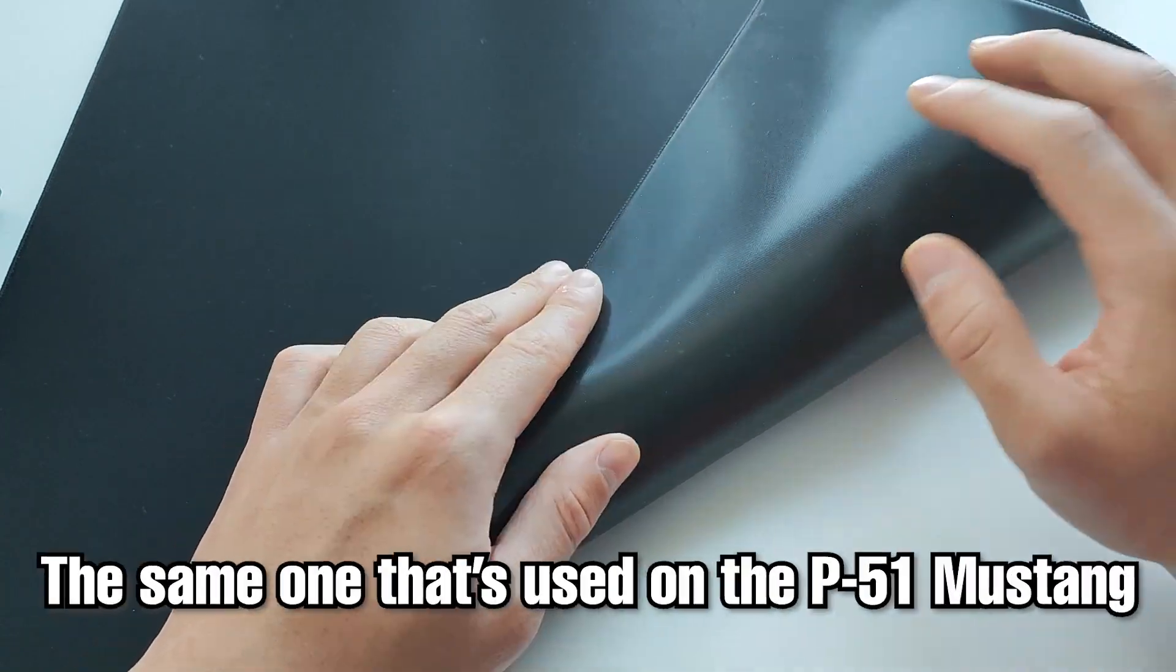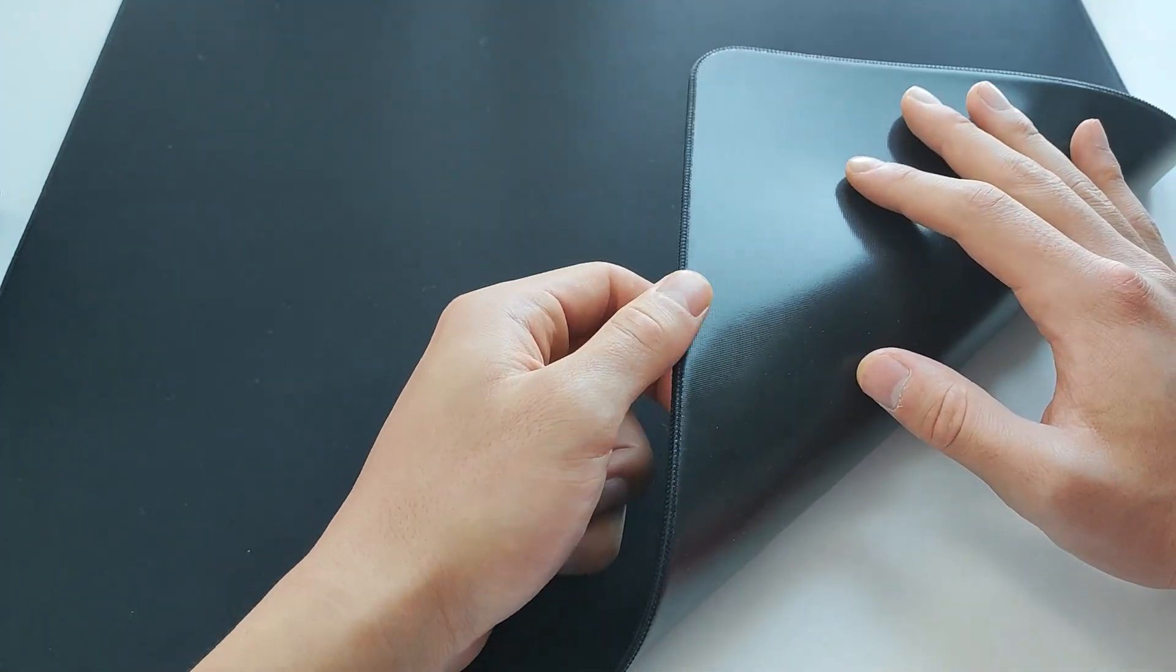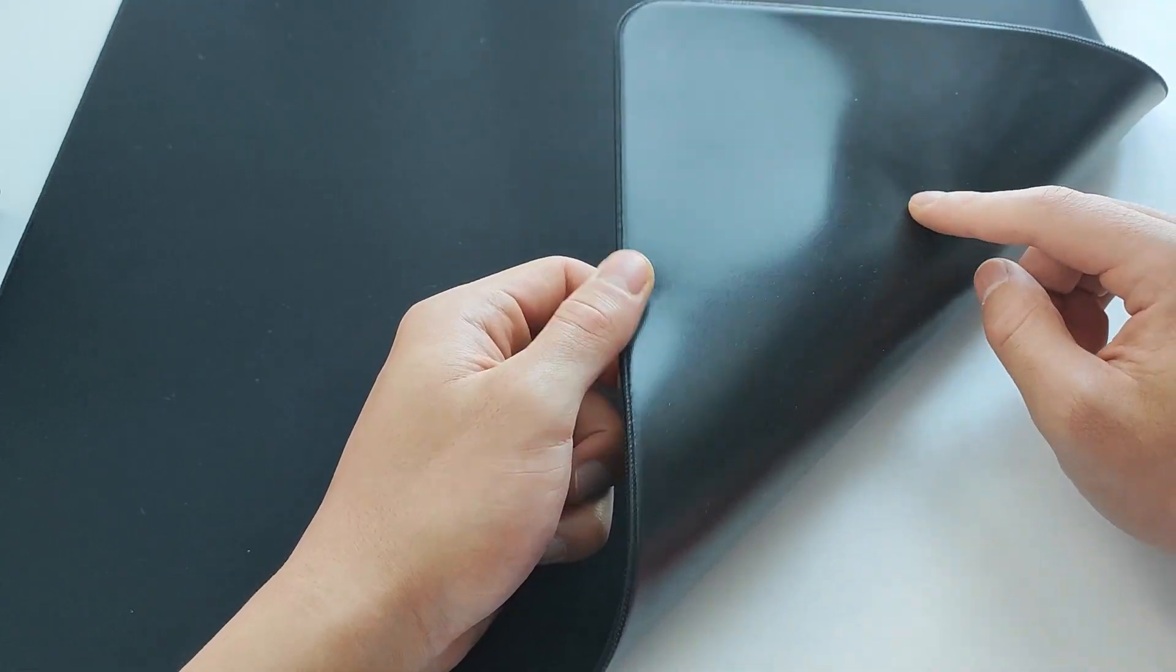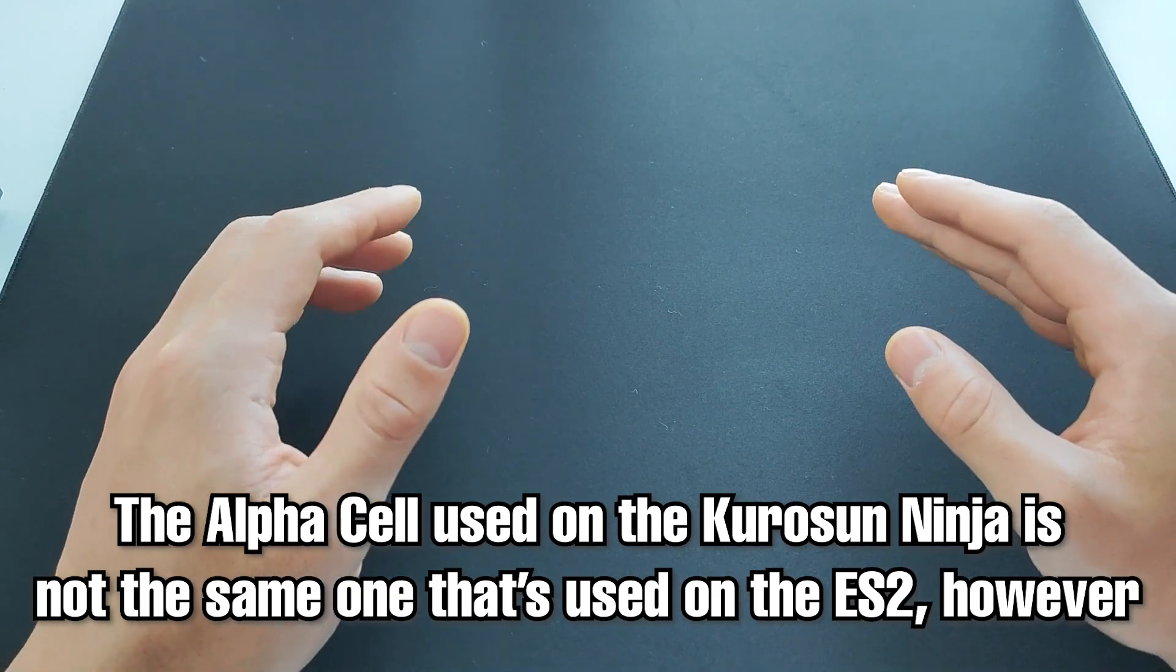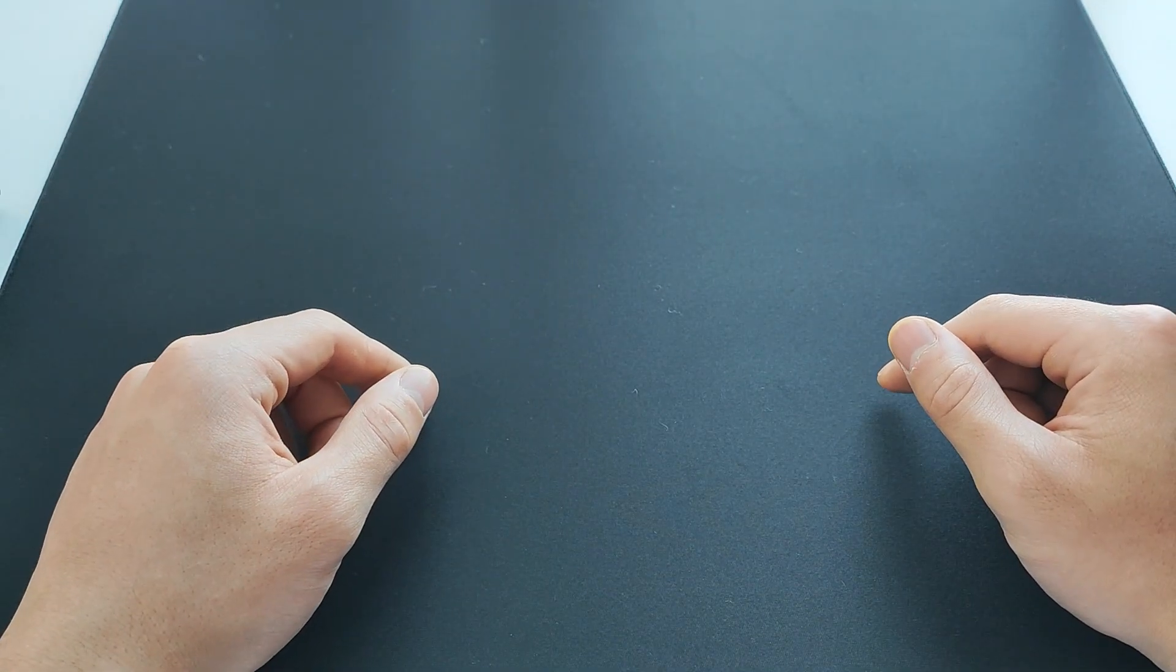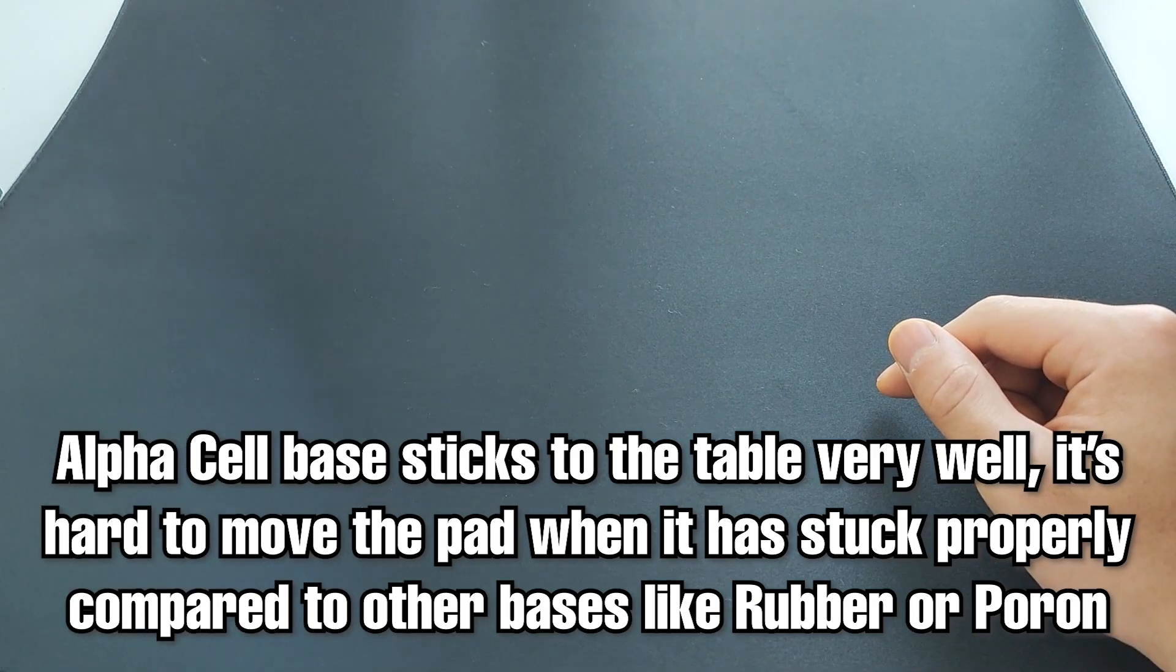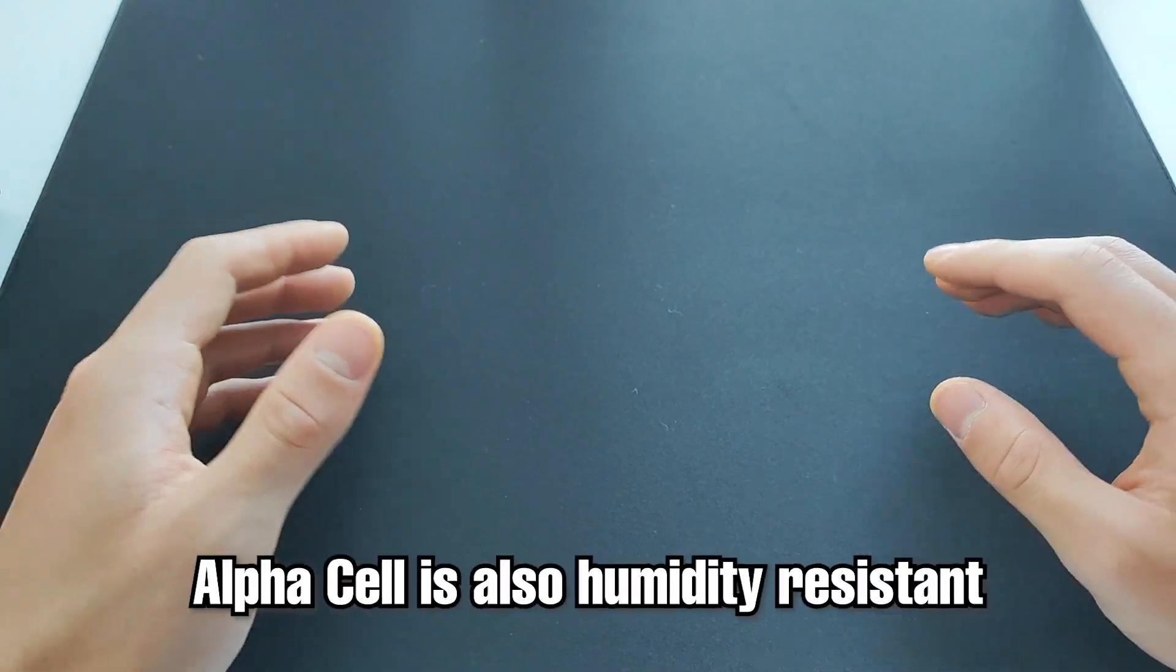So the base is Alpha Cell. It's the same as that used on the P51 Mustang. And at this point, I have reached the conclusion that this is proper Alpha Cell, while the Alpha Cell used on the Kurosawa Ninja is actually different from other Alpha Cell pads. Now if you've ever experienced Alpha Cell, you'll know that this base sticks to the pad like nothing else. And in terms of being a base itself, the Alpha Cell is also a top performer and humidity resistant.